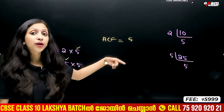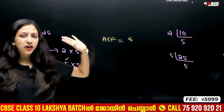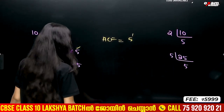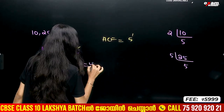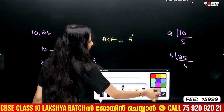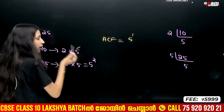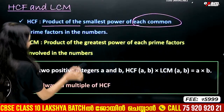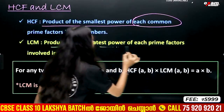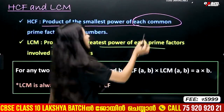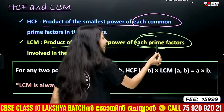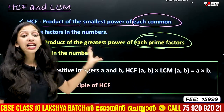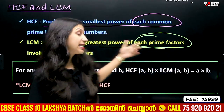Common factors have the least power. The least power of 5 is 5 raised to 1. What is LCM? LCM is the product of the greatest power of each prime factor. If you have common prime factors, each prime factor contributes its greatest power.